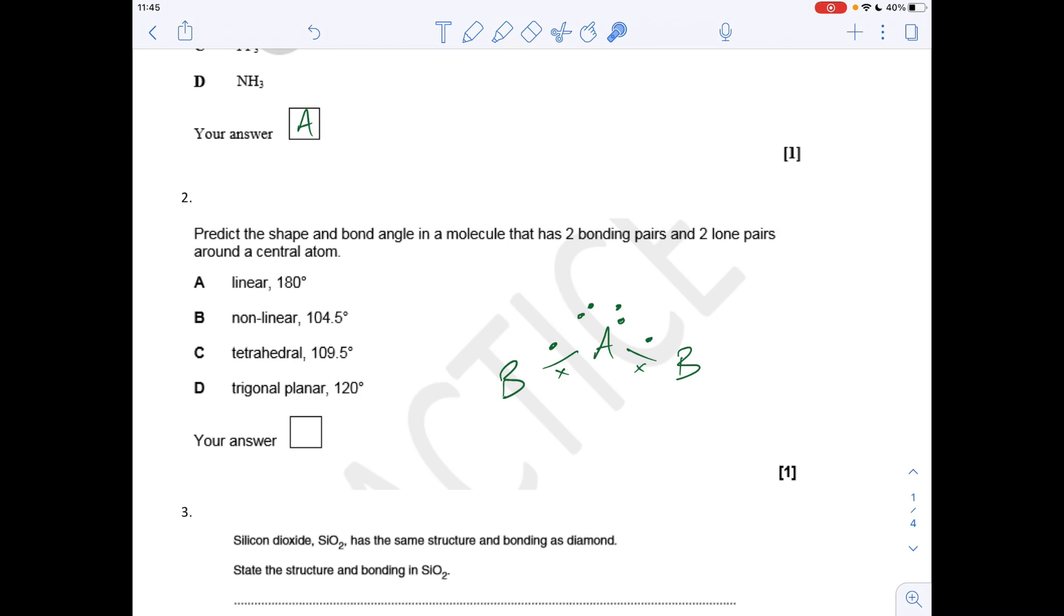Question two, I've just knocked up a sketch of the information. Two bonding pairs, two lone pairs around there. The shape and angle associated with that combination is non-linear, 104.5 degree angle, so it was B.